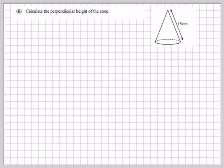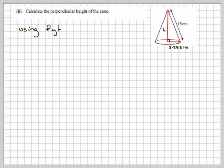Calculate the perpendicular height of the cone. We just found the radius to be 2.2916 centimetres. This is the perpendicular height. So using Pythagoras' theorem,